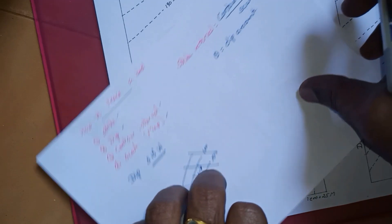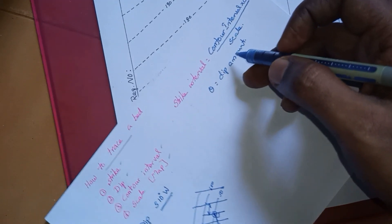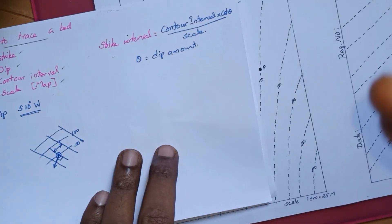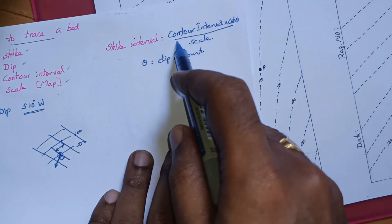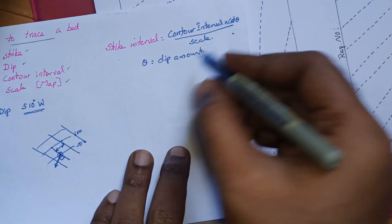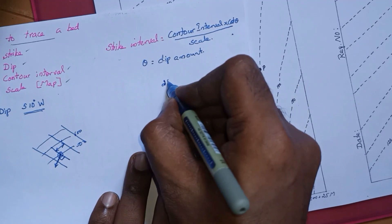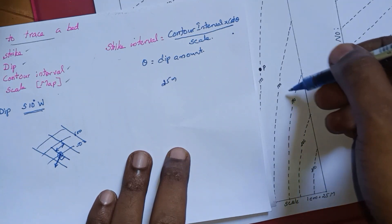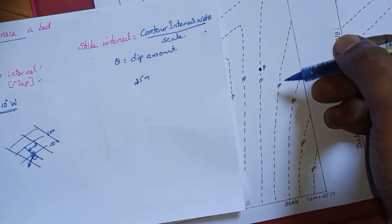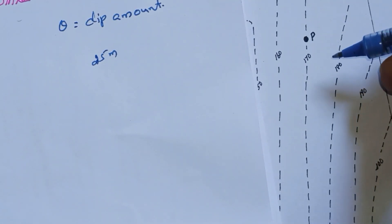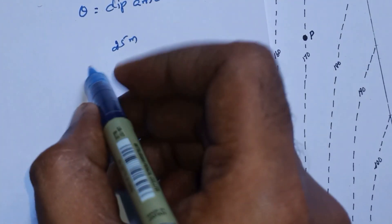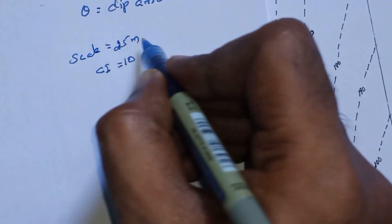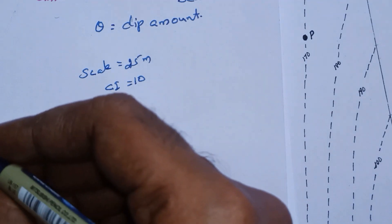We need to identify a formula for the strike interval. The formula is: Strike Interval = Contour Interval × cot(θ) / Scale. The scale is 25 meters, the contour interval on the map is 10 meters, and the dip amount theta is 10 degrees.